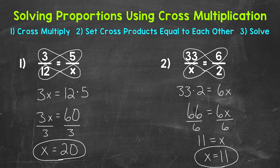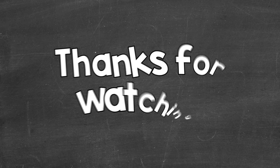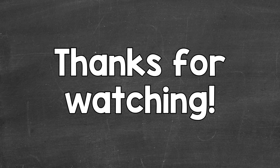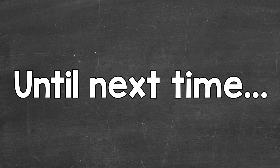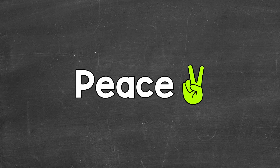So there you have it — that's how you solve a proportion using cross multiplication: cross multiply, set the cross products equal to each other, and solve. To recap, we can look for a relationship to solve a proportion, or we can use cross multiplication. I hope that helped. Thanks so much for watching. Until next time, peace.